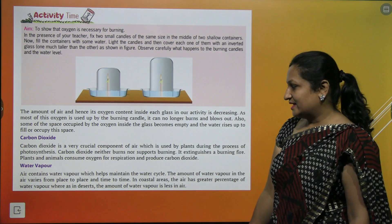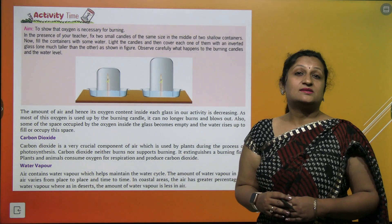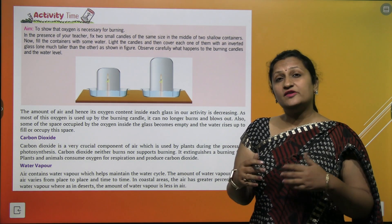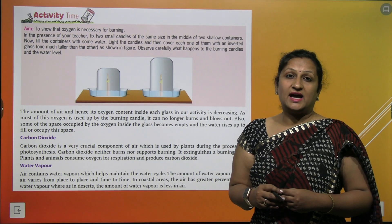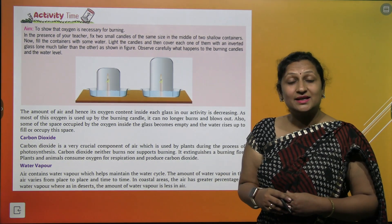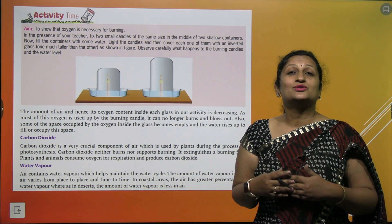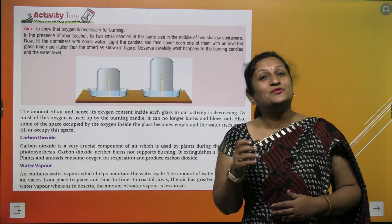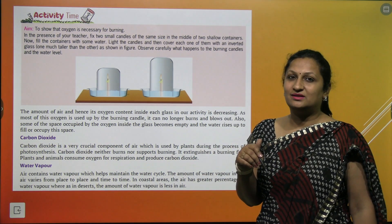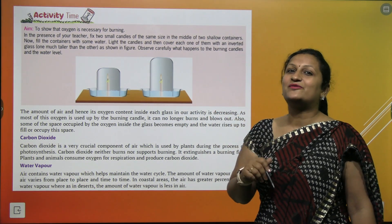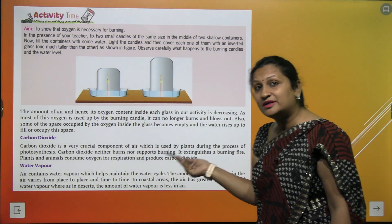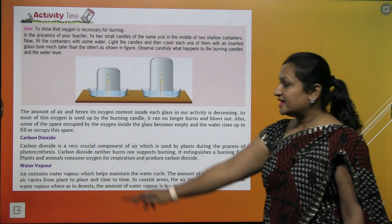Another gas is carbon dioxide. Carbon dioxide is very important. It is present in 0.03% in the atmosphere. It is a very good gas that acts as a fire extinguisher. Secondly, it is a very important component for the formation of food by the plants by the process of photosynthesis. Plants require carbon dioxide plus water; in the presence of sunlight and chlorophyll, plants prepare food in the form of glucose. So for photosynthesis, this carbon dioxide is very important.